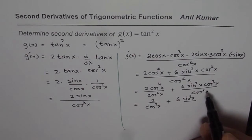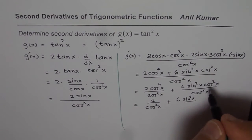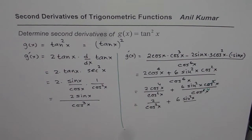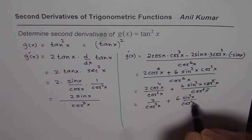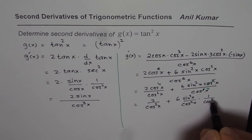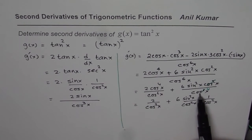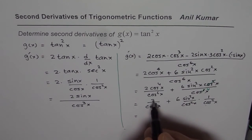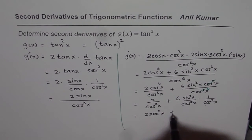Let me simplify further. The cos square x terms cancel, leaving us with cos to the power of 4 x. We have 2 cos square x, which I will write as sin square x over cos square x times 1 over cos square x, and cos square x divided by cos to the power of 6 x leaves cos to the power of 4 x. So this can be written as 2 secant square x plus 6 times that term.